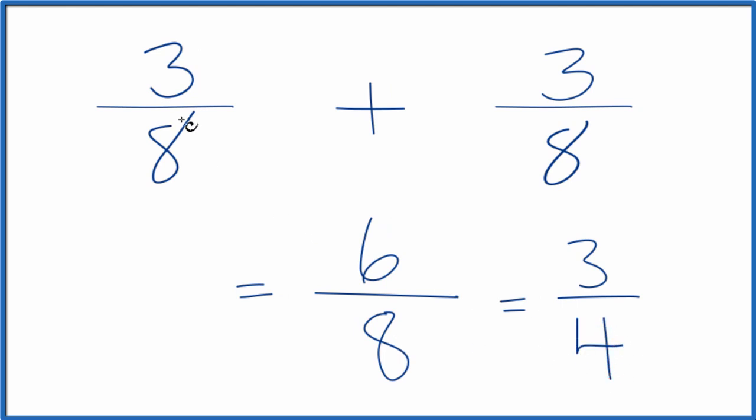So in answer to our question, when we add 3 8ths plus 3 8ths, the simplest answer would be 3 4ths. But 6 8ths, that would also be correct, it's just not in lowest terms.